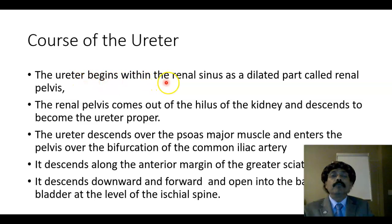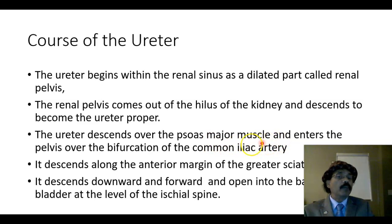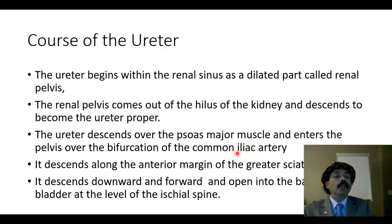The ureter begins within the renal sinus as a dilated part called the renal pelvis. The renal pelvis comes out of the hilum of the kidney and descends to become the ureter proper. The ureter descends over the psoas major muscle — a muscle in the posterior abdominal wall — and enters the pelvis over the bifurcation of the common iliac artery into the internal iliac artery and the external iliac artery. The common iliac arteries are the terminal branches of the abdominal aorta.